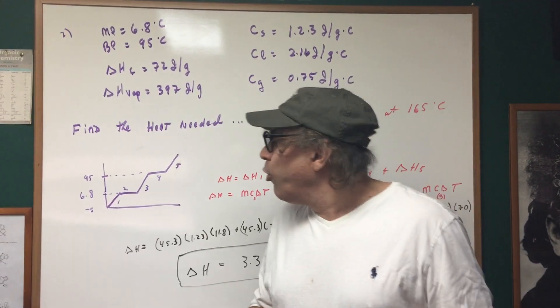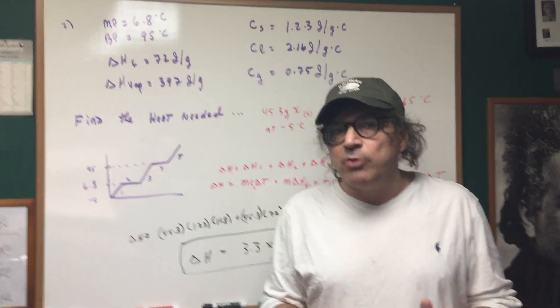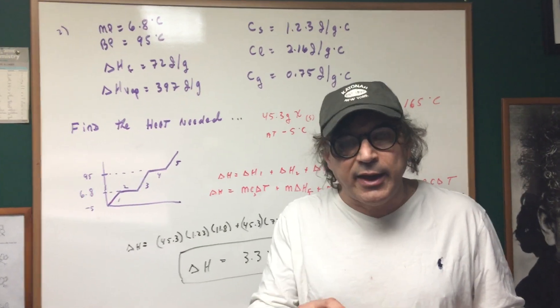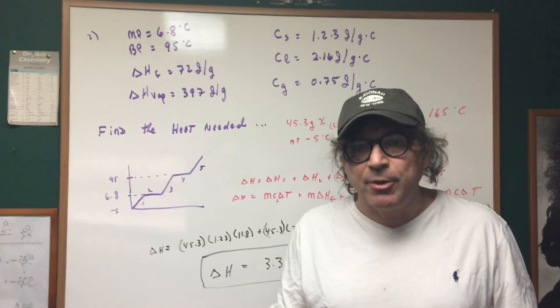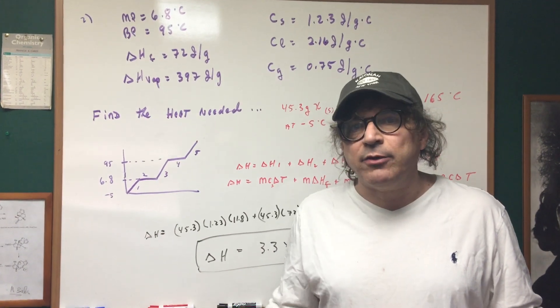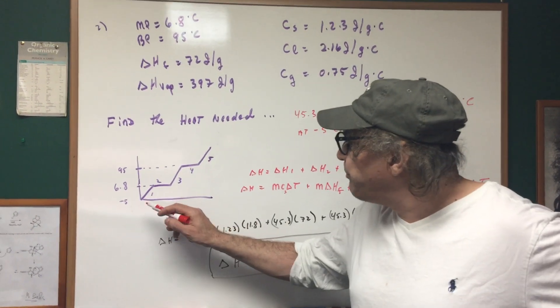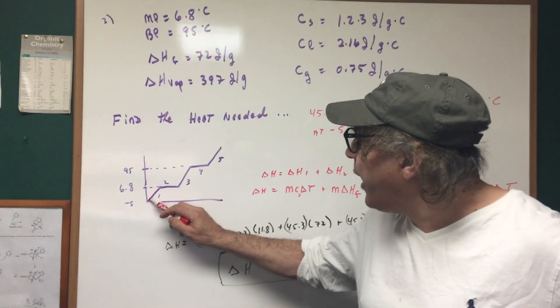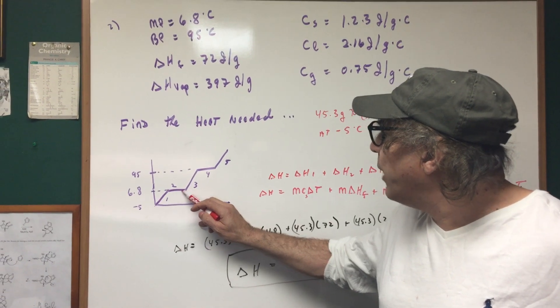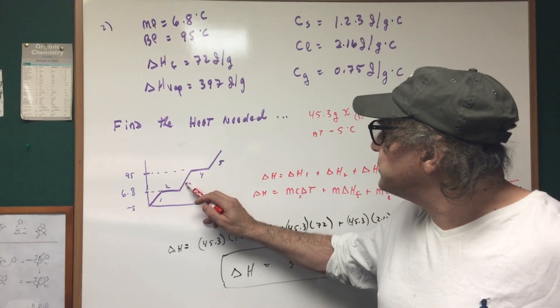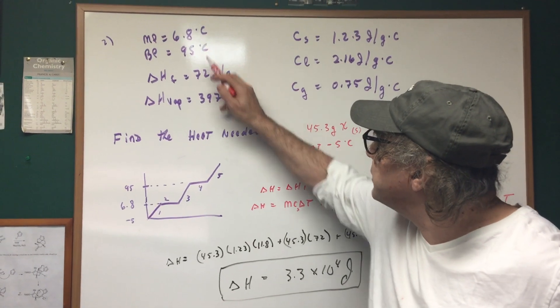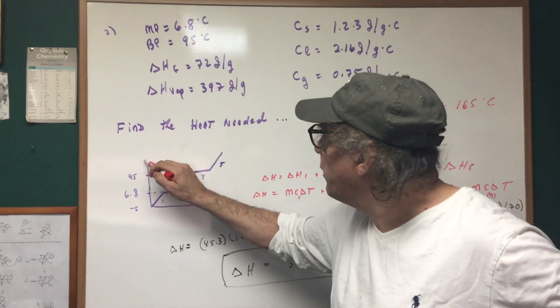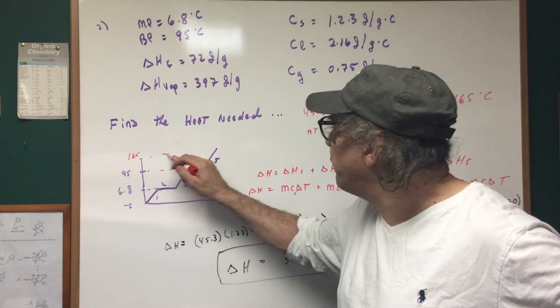The question here involves multiple transitions. So notice we're going to first have to take the solid, we're going to have to heat it, we're going to have to melt it, raise the temperature, boil it, and then go up to the 165. So I think it's best to do these problems and sketch the diagram like we just did. We're going to start at minus five, go up to the melting point, we're going to melt it, then we're going to raise the temperature up to the 95, then we're going to boil it and then go up to the 165 that I requested.